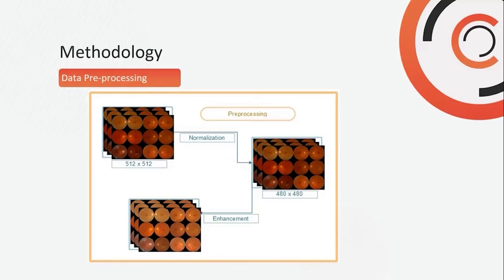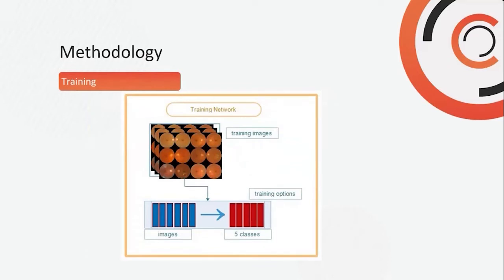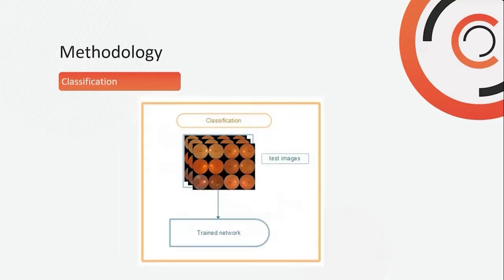Then we have the training network. Training images go through the training options — some images from the dataset train the network to recognize the five classes of Diabetic Retinopathy: Normal, Mild, Moderate, Severe, and Proliferative. Then we have classification, where test images are fed to the trained network for classification using U-Net, our proposed method.